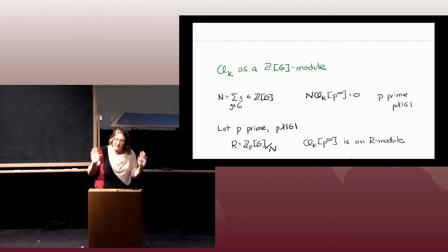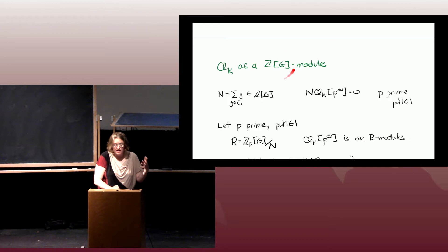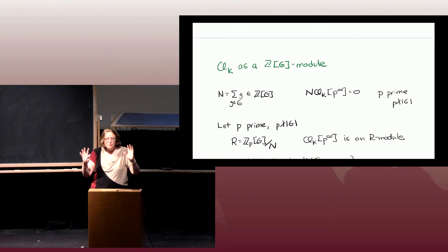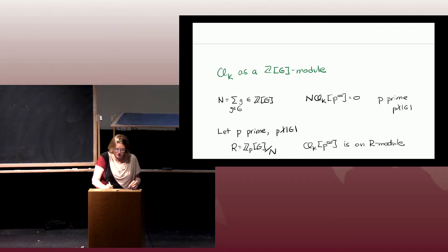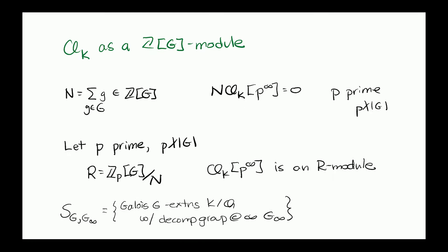Since we're going to think about just the p-power torsion — the coelepe subgroup of the class group for a particular prime p — the ring acting more precisely is R = Z_p[G] mod this norm element N. The Z_p here emphasizes that we're only looking at the coelepe subgroup, where there's only p-power torsion in the finite modules. So the ring that acts on the coelepe subgroup of the class group is this group ring Z_p[G] modulo the norm element N.